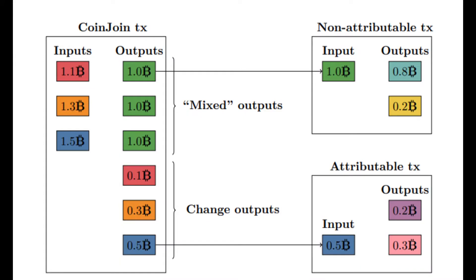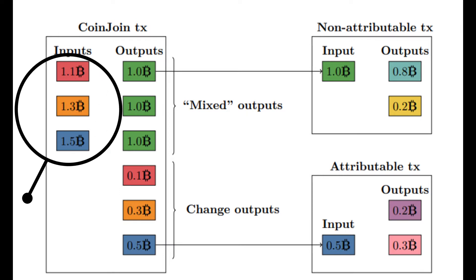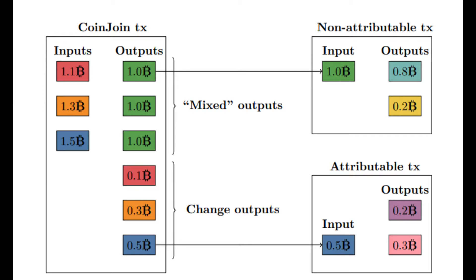Let's look at a visual example of the current implementation, which is their zero-link framework. This is useful for folks who haven't had a good visual for CoinJoin transactions more generally. In this simplified example, on the left-hand side you have three users — the 1.1, the 1.3, and the 1.5 Bitcoin users — entering into a mutually coordinated transaction to mix their coins. The purpose is to obfuscate the linkage between the specific inputs and outputs.